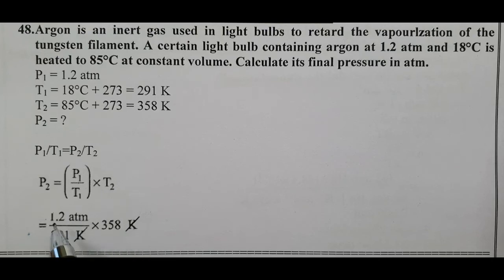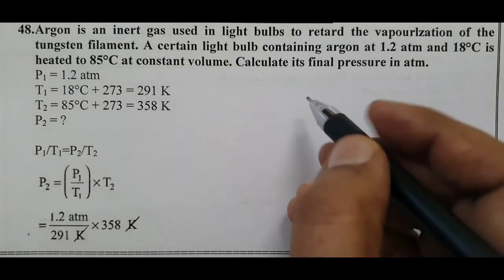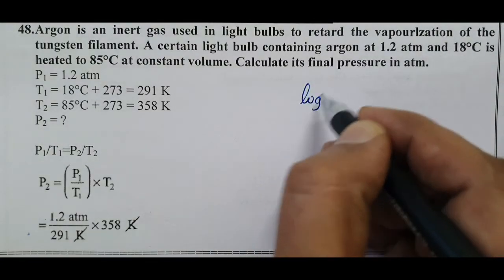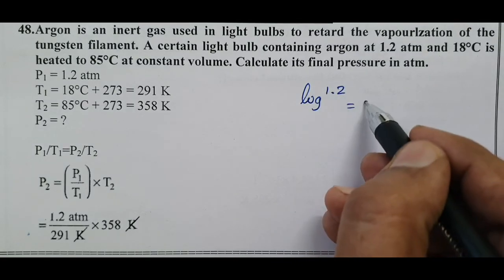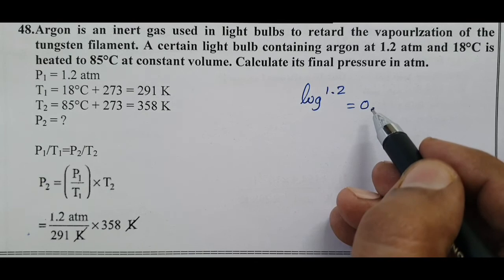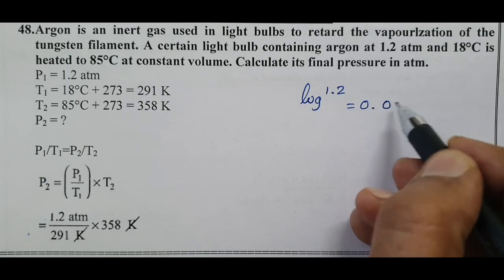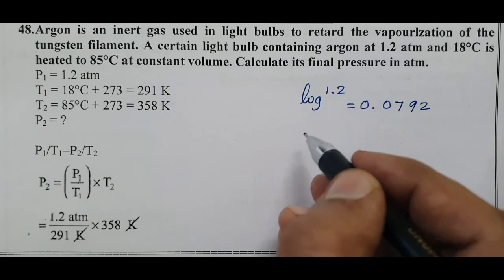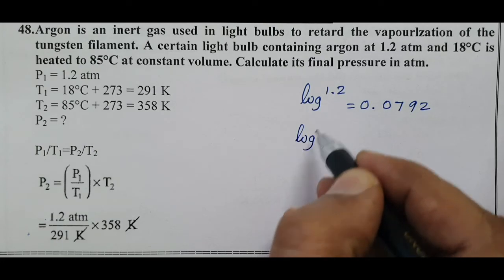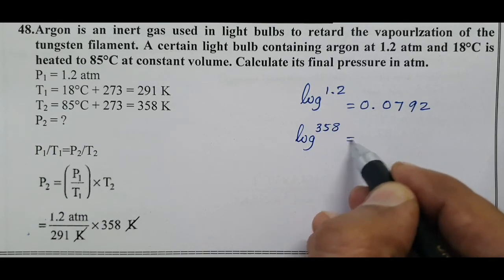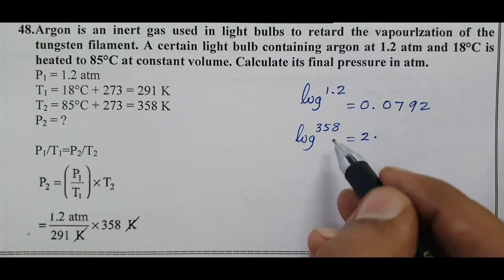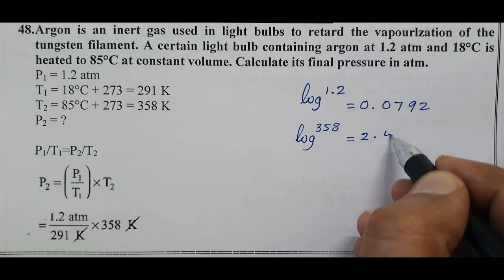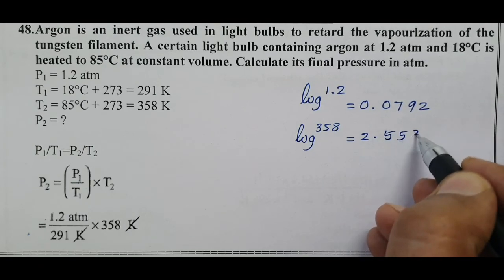We have to calculate P2 using logarithms. Log 1.2 equals 0.0792. Log 358 equals 2.5539.